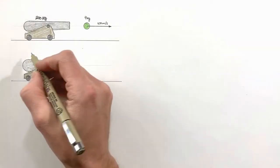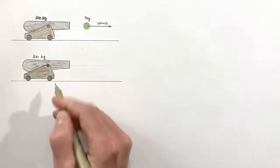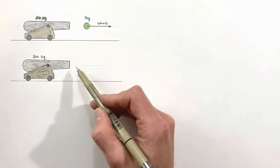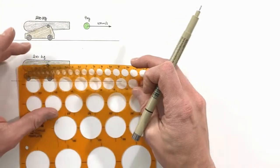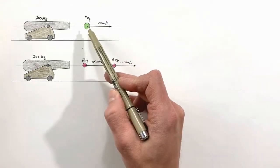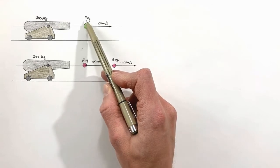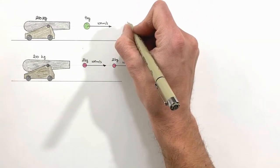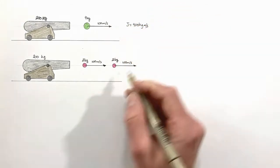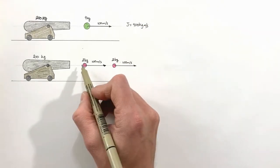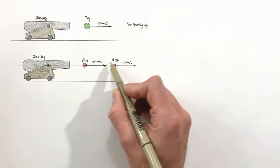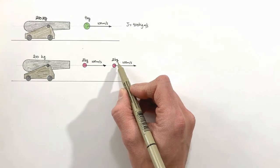We've got the same 200 kilogram cannon, but this time instead of one single four kilogram cannonball, I want to fire two separate two kilogram cannonballs. The total impulse given to each cannonball is mass times velocity, so that's 2 times 100, giving 200 kilogram meters per second of impulse on each cannonball.